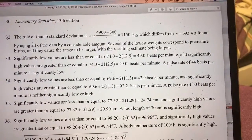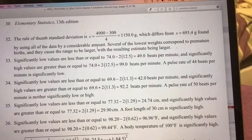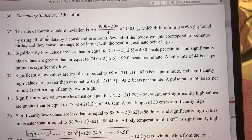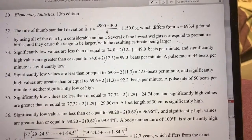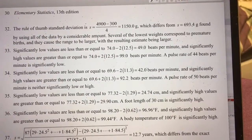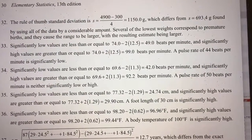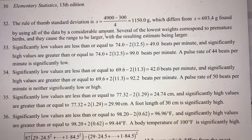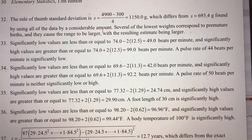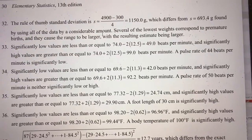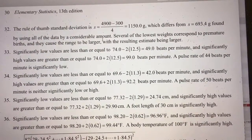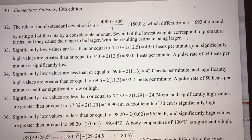Therefore, 44 is unusual and significantly low. The answer key confirms: significantly high values are greater than 99 beats per minute, and a pulse rate of 44 beats per minute is significantly low because it falls in the tail.